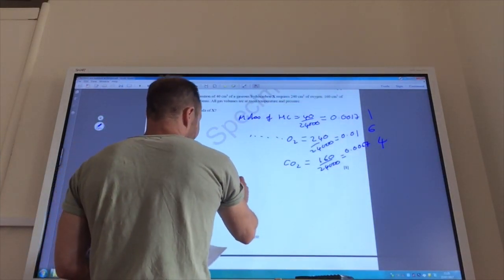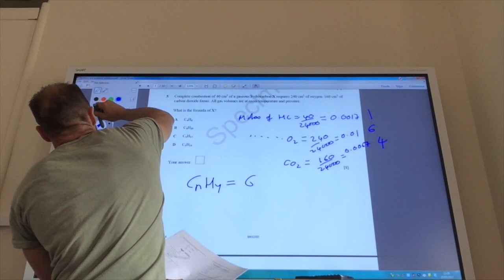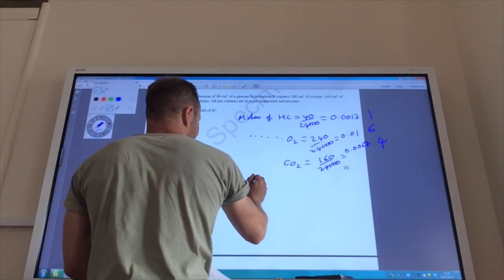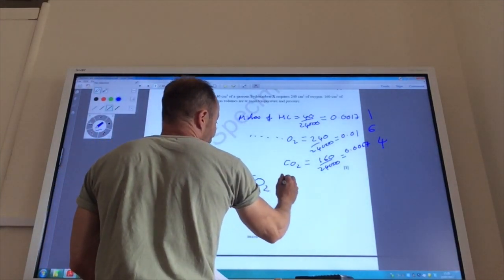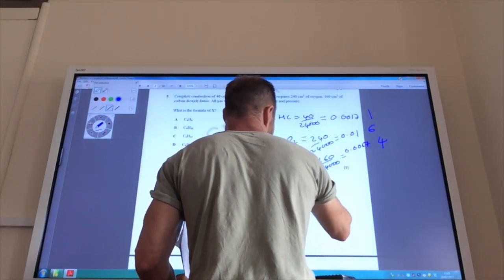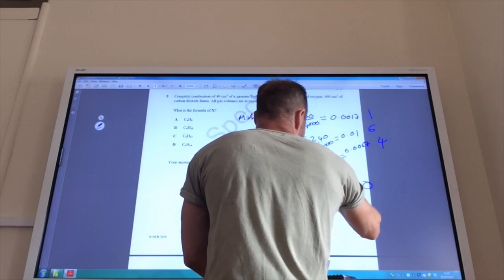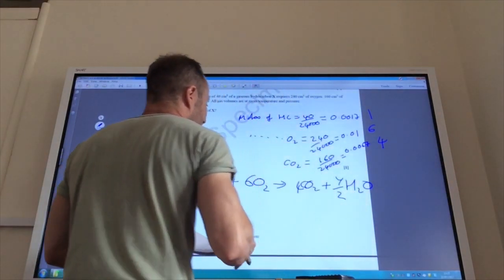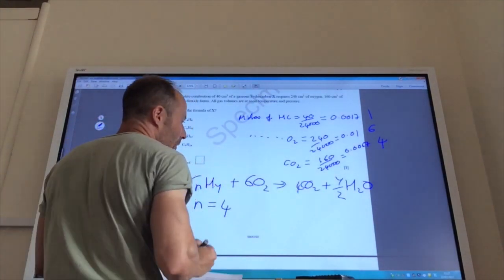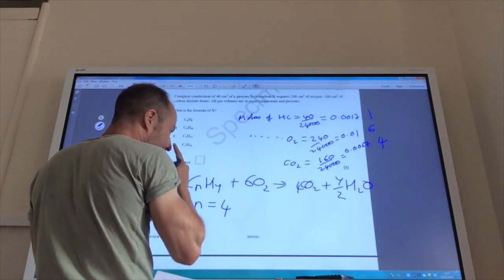If you do that, then you divide by the smallest one. The smallest one is going to be this one, isn't it? So, you divide by that, that becomes one, that will become six, and that becomes four. Okay, so you know you've got a hydrocarbon, CₙHᵧ. You know that you are adding to that. For every one mole of that, you are adding six moles of oxygen, like so. You are making four moles of CO₂, and water, you don't know, but the number of moles of water will be this number divided by two. Okay, so N must equal four.